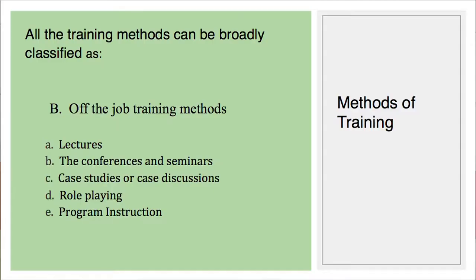Now let us discuss off-the-job training, also called the classroom method. Training is not part of everyday activity under this method. The location may be a company classroom or an outside educational institution or association not part of the company office. Employees are not attending their regular work but are allowed to attend the training center for a specific period. One method here is lectures, where employers organize lectures with an instructor or resource person on a specific topic, which is fruitful when theoretical problems, concepts, and behavioral attitudes are discussed.